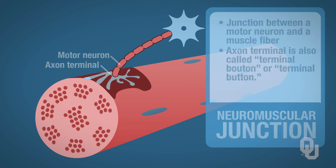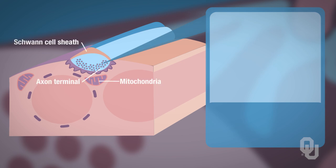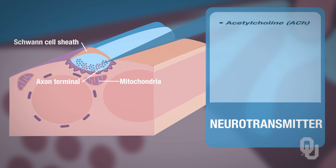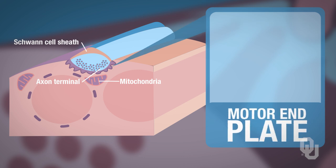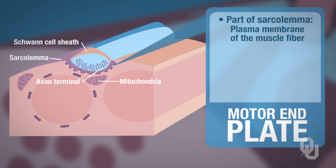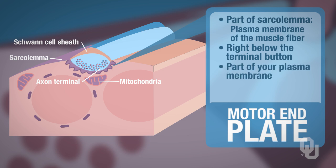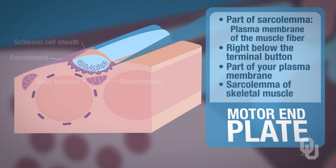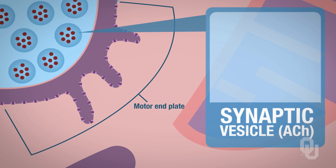Now let's zoom in on a synapse. The red dots inside the axon terminal are the neurotransmitter — in this case, acetylcholine. The plate at the bottom is called the motor end plate, which is part of the sarcolemma, the plasma membrane of the muscle fiber. The motor end plate is only the region that sits right below the terminal button. Here are your synaptic vesicles containing the neurotransmitter acetylcholine.